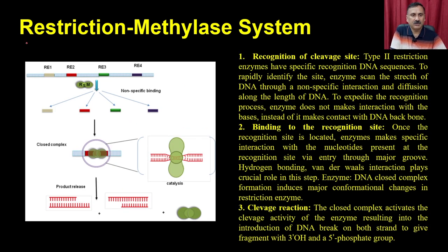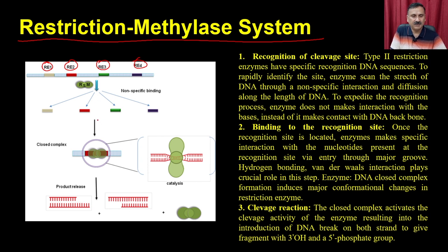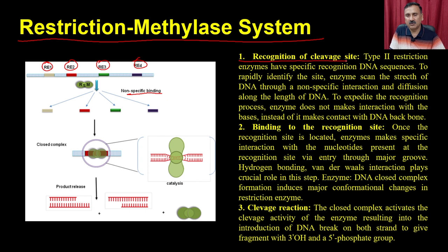In the restriction-methylation system, there are different types of restriction sites — RE1, RE2, RE3, RE4. The enzymes non-specifically bind to these sites but form a tight complex at specific sites where all subunits such as the R, S, and M subunits participate in the reactions. To rapidly identify the site, the enzyme scans the stretch of DNA through non-specific interaction and diffusion along the length of DNA. Type 2 restriction enzymes have specific recognition sequences.